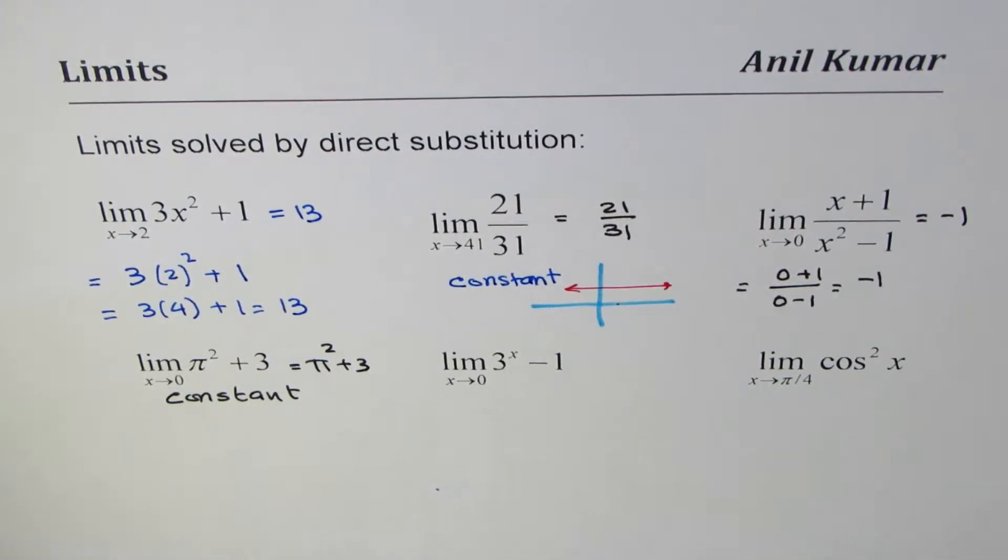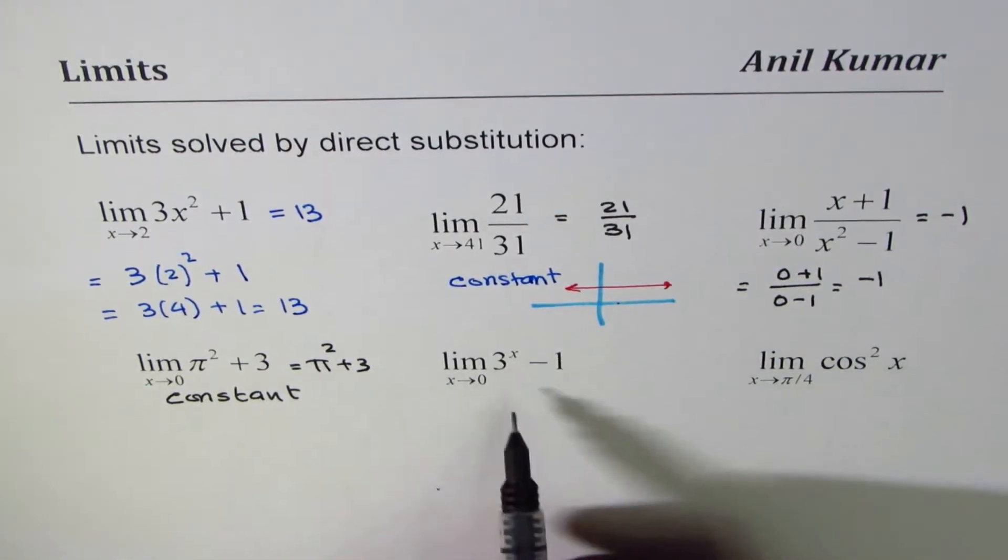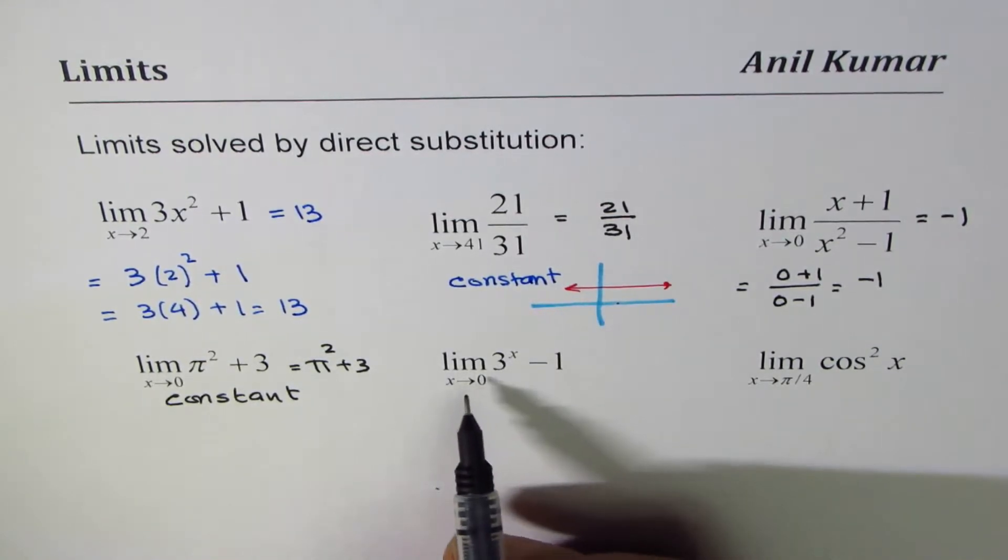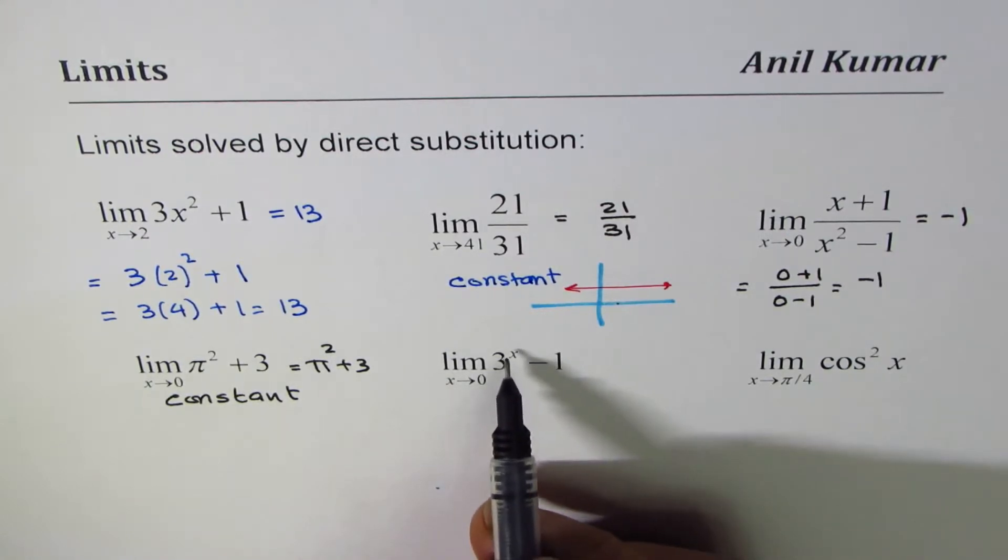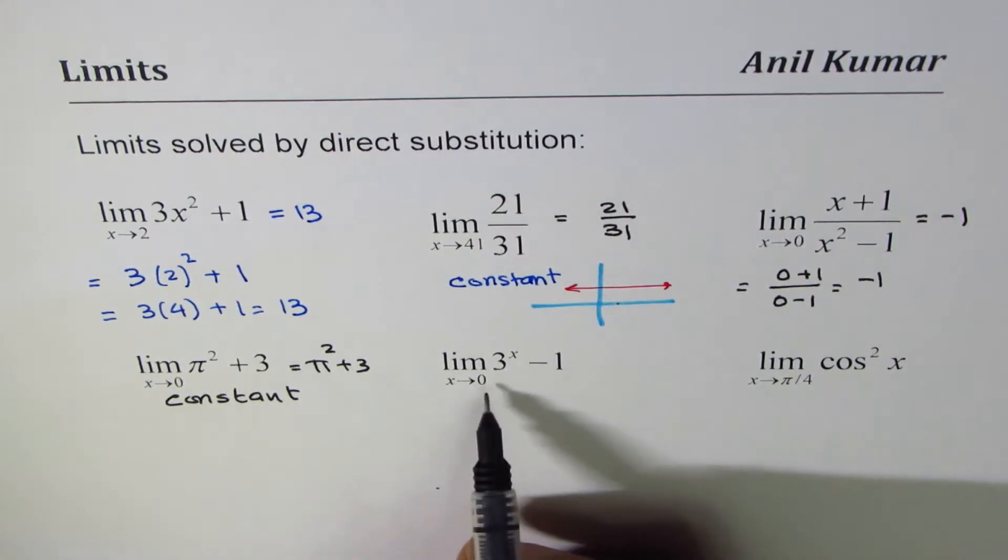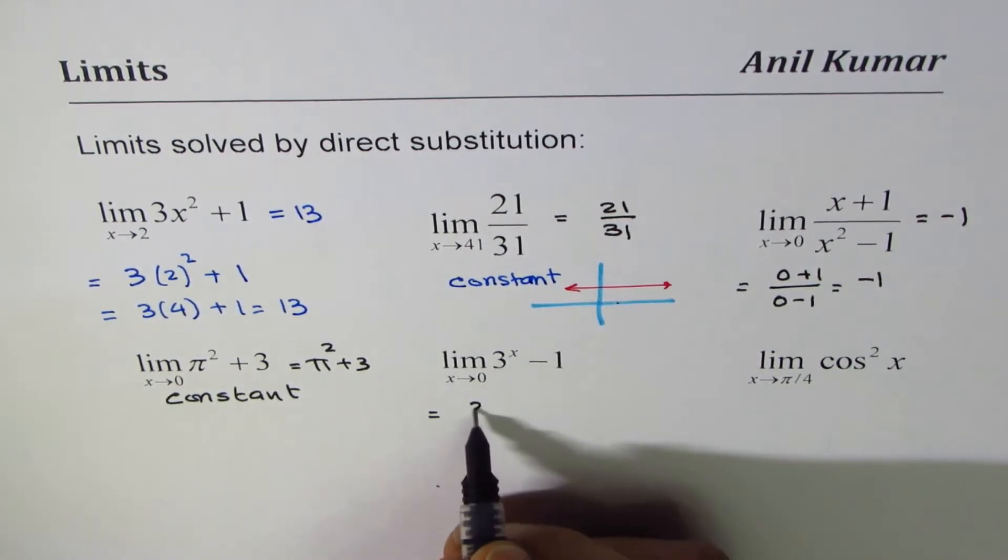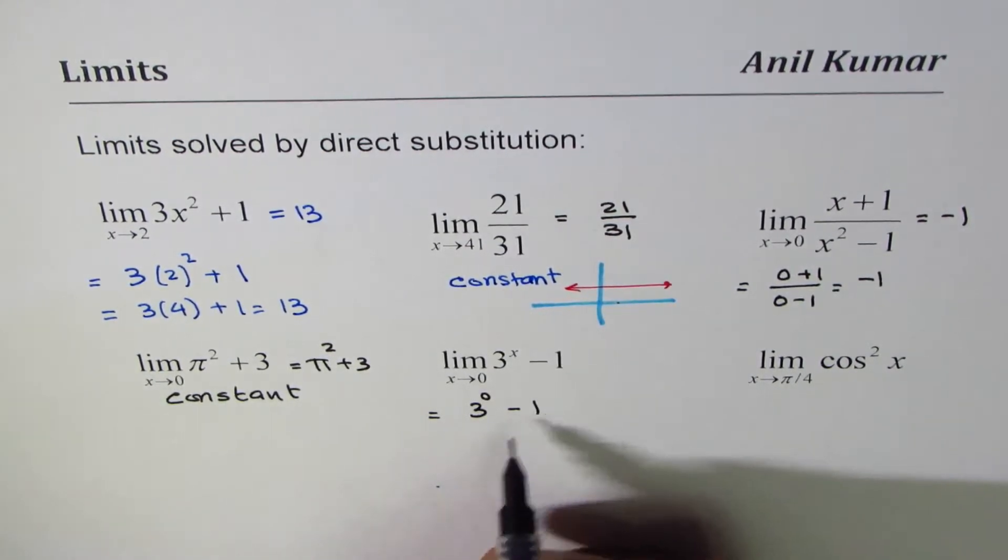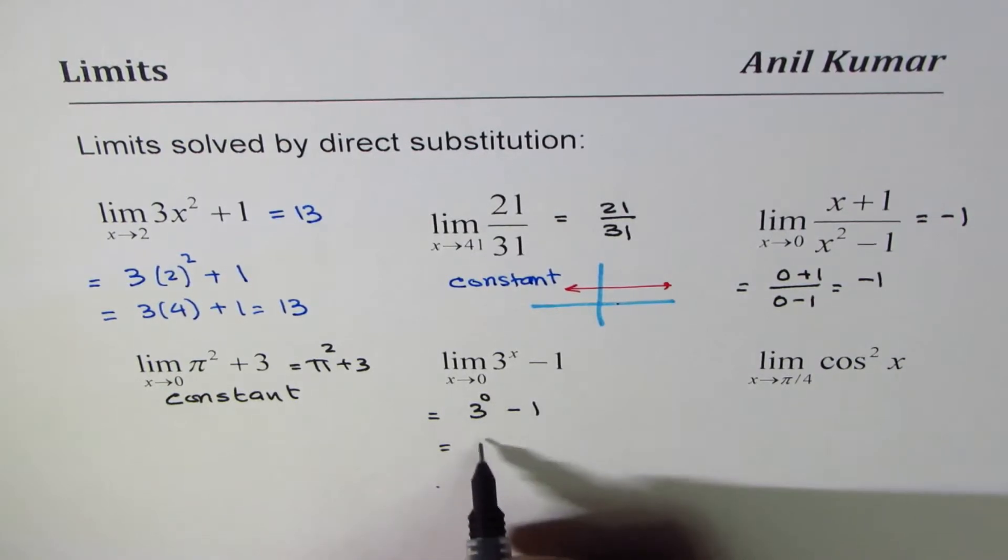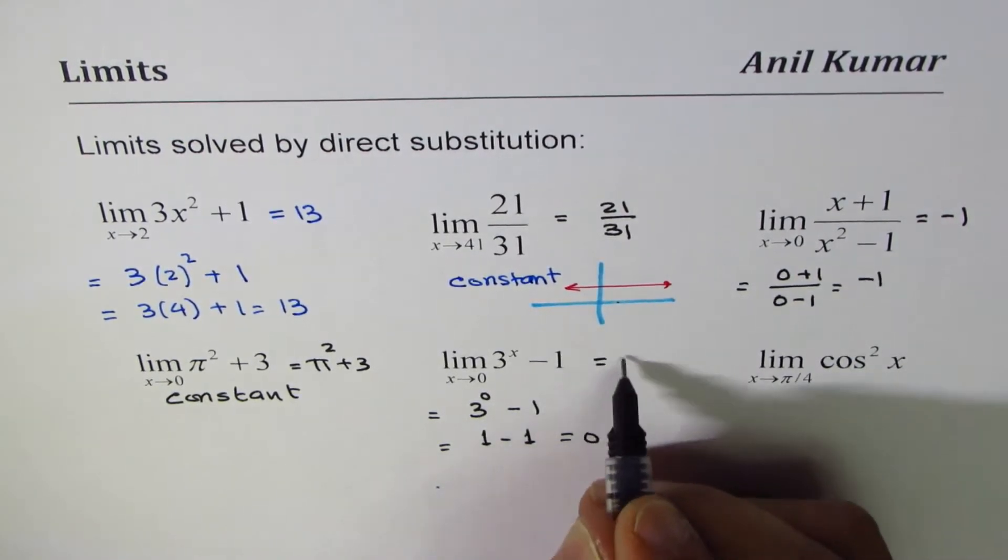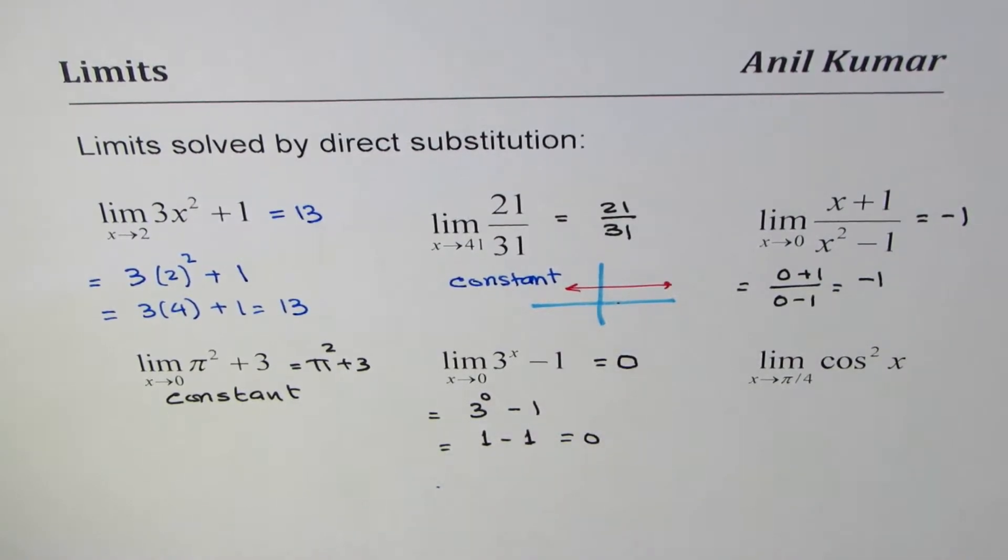Now we have limit 3^x - 1 when x approaches 0. So let's substitute 0. We get 3^0 - 1. Now anything to the power of 0 is 1, so 1 - 1 is 0, so the answer is 0. Zero is a valid real number and that could be the answer.